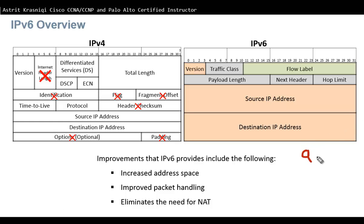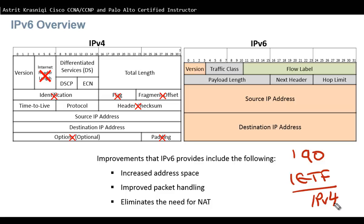Around the early 1990s, the Internet Engineering Task Force started getting concerned with IPv4. They were thinking there are some issues with IPv4, and also the address space might not be enough. This led to the development of a new protocol, which was IPv6.